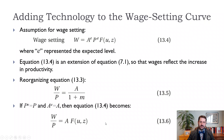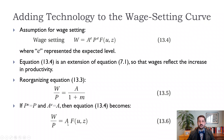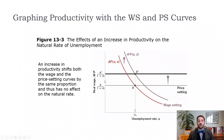Assuming expectations are correct — so expected price level PE equals actual price level P, and expected productivity AE equals actual productivity A — we can re-solve for the real wage: W over P equals productivity A times our function of the unemployment rate and z. The key thing is that productivity A is in the numerator for both equations. So when we graph them, if A increases to A prime, both curves shift up by exactly the same amount. The real wage goes up, but the natural rate of unemployment stays the same.